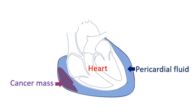Secondary spread can also come from the breast. Certain cancers related to blood cells can also cause bleeding into the pericardial cavity and pericardial tamponade. Secondary spread of cancer can occur from a distant organ as well, though less common.